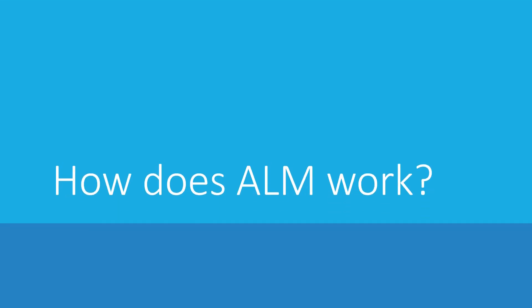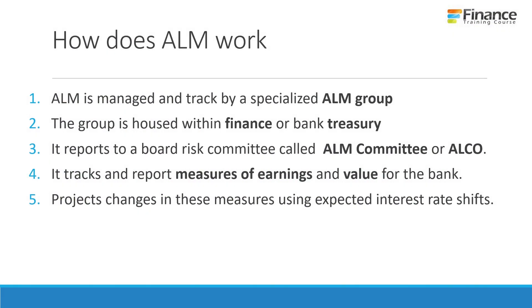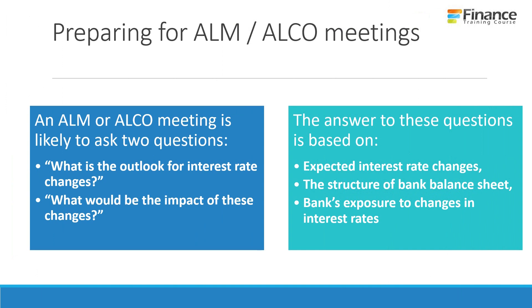ALM is managed and tracked by a specialized group housed within finance or bank treasury. It reports to a board risk committee called the ALM committee, or ALCO for short. It tracks and reports measures of earning and value for the bank, and also projects changes in these measures based on expected shifts in interest rates.